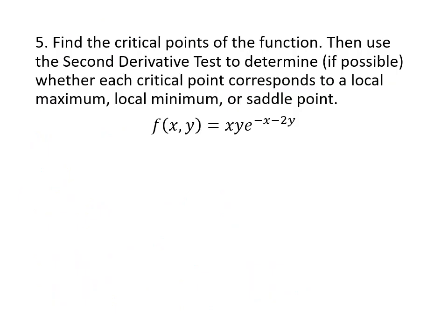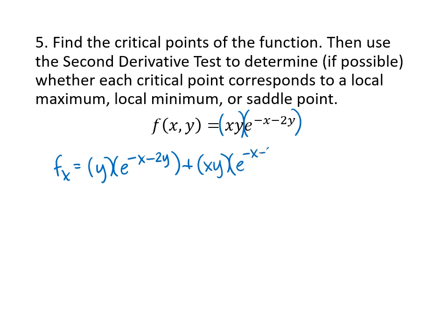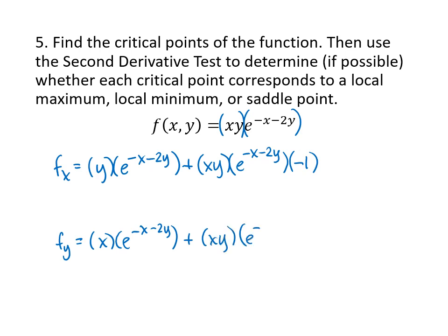One last example — same process, but this time f sub x requires the product rule since we have two expressions multiplied together that both involve x. Using the product rule: it's the derivative of the first function (y) times the second function (e to the negative x minus 2y) times negative 1, plus the first function times the derivative of the second function. f sub y is computed similarly using the product rule and chain rule.